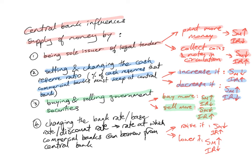The fourth method is by changing the bank rate, also called the base rate or the discount rate — all different names for the same thing. This is the rate at which commercial banks can borrow from the central bank, which they may need to do when facing liquidity issues or a sudden increase in withdrawals. If the central bank raises this rate, the supply of money decreases and interest rates rise. If it lowers the rate, it becomes cheaper for commercial banks to borrow, the supply of money increases, and interest rates fall.